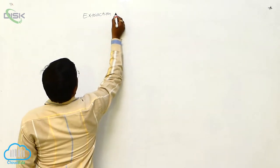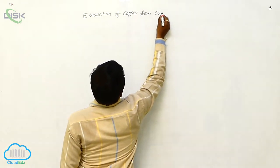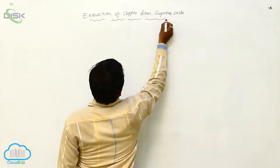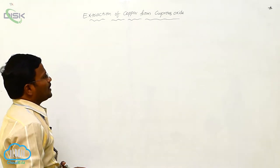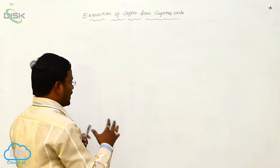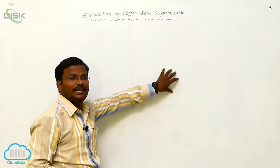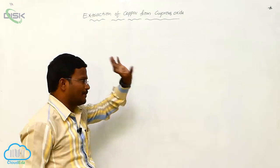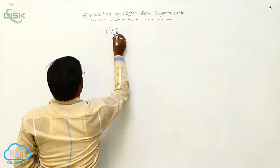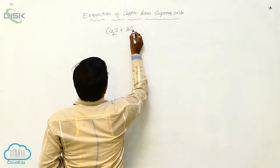Extraction of copper from cuprous oxide. Copper in the earth's crust is available in its sulfide form. The Ellingham diagram explains that the oxidation of copper into cuprous oxide takes place at nearly 500 to 600 Kelvin temperature. This is most suitable for us — the cuprous sulfide, that is sulfide ores of copper, participates in oxidation at high temperature.